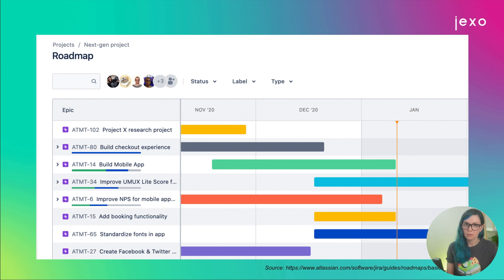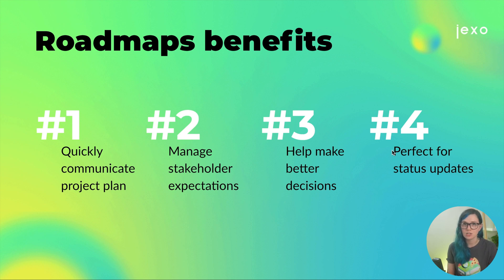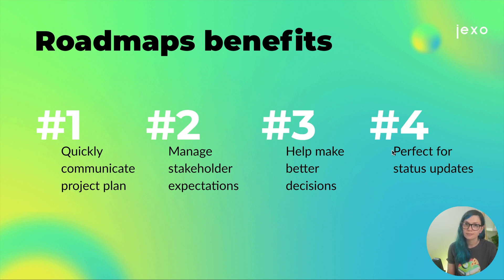A great example of roadmaps is Jira Project Roadmap, where you can easily plan high-level initiatives — aka epics. The key benefits of having a roadmap are: it helps you quickly communicate project plans and goals as a high-level visual document; it helps manage stakeholder expectations by setting goals, budget, and timeline early on so everyone is on the same page; it helps make decisions by allowing everyone to refer to the most important goals and activities; and if kept up to date, it's a great tool for status updates.